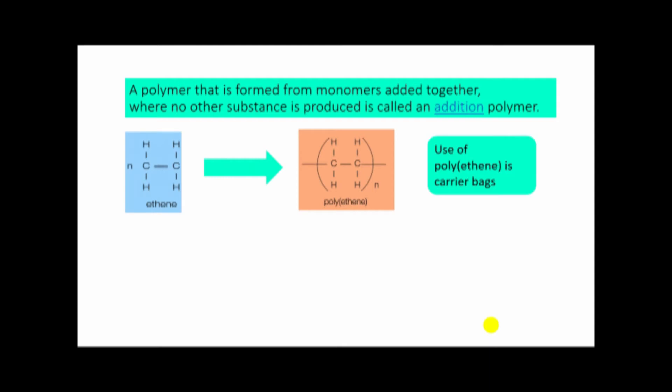Another example: vinyl chloride. Vinyl chloride is the monomer, and polyvinyl chloride is the polymer. The use of polyvinyl chloride is PVC pipe or water pipe.